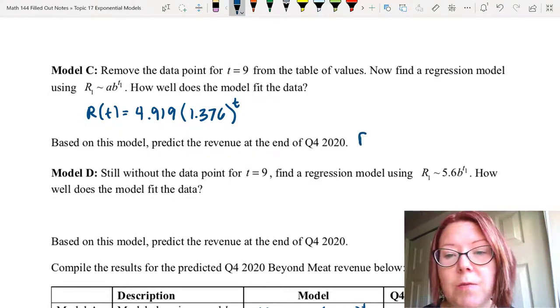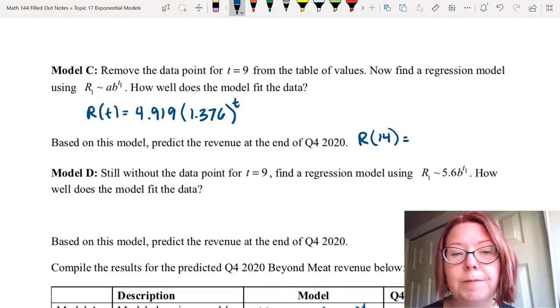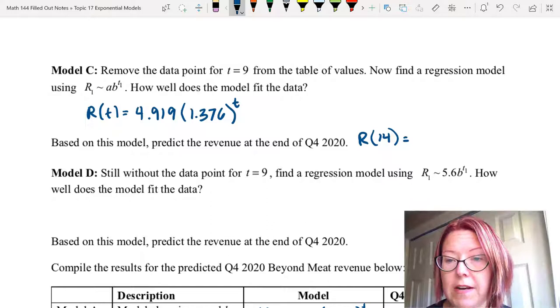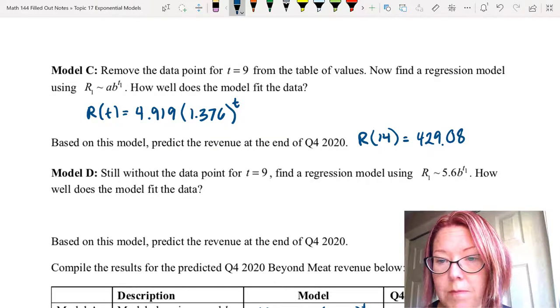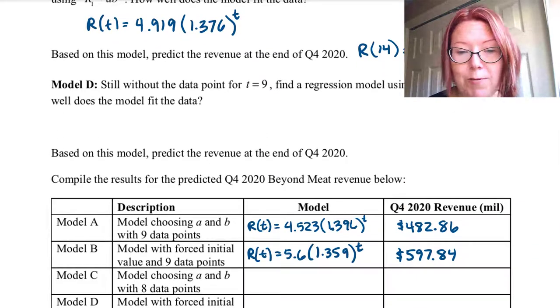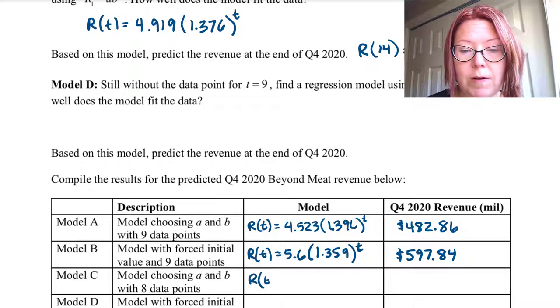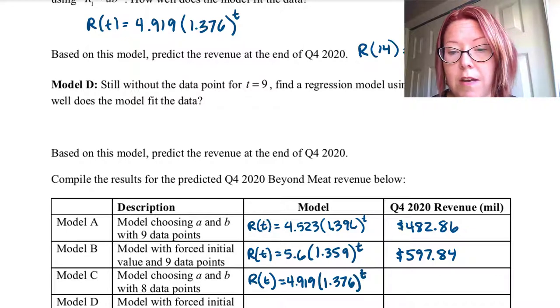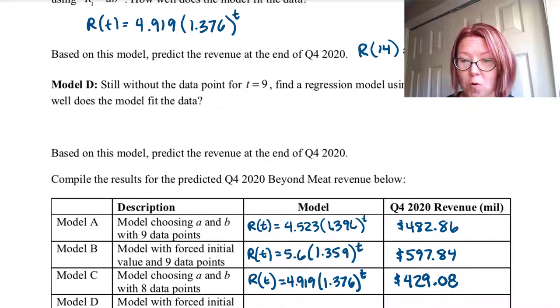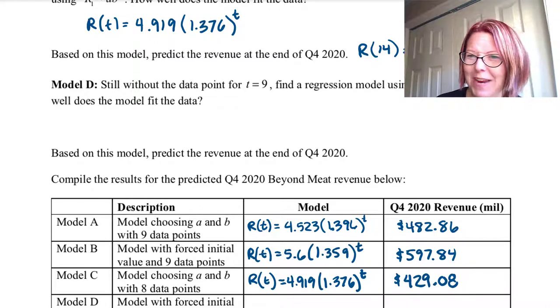And again we want to calculate what is R of 14 if we use this model. And here we have a value of 429.076 or let's just say 0.08 million. So adding that to our table for compilation the model here with eight data points and choosing A and B with the regression is 4.919 left paren 1.376 right paren to the t with an outcome for Q4 2020 revenue of 429.08. And look how much lower that one is than the other two. Crazy right?